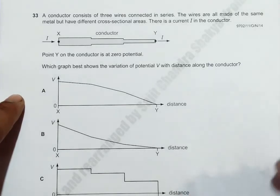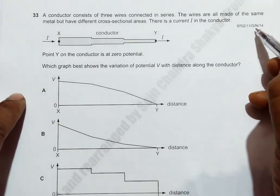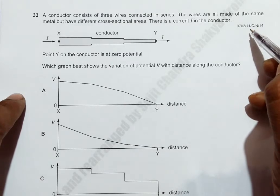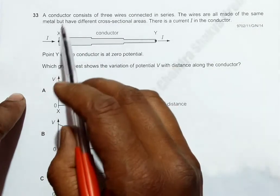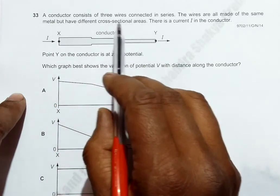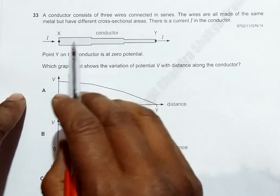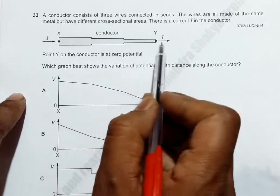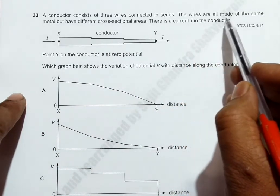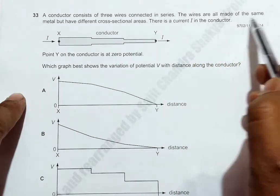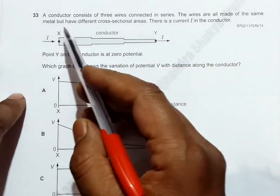This is question 33 from 2014 October-November paper 11. A conductor consists of three wires connected in series. These are the three wires - one, two, three - they have been connected in series. All wires are made of the same metal but have different cross-sectional areas.